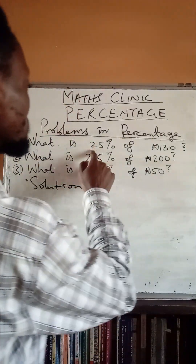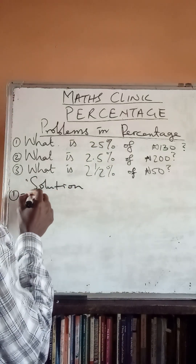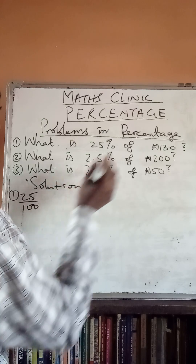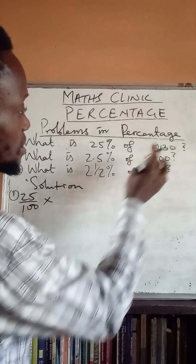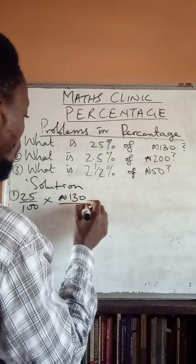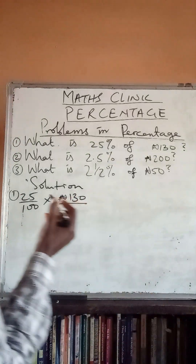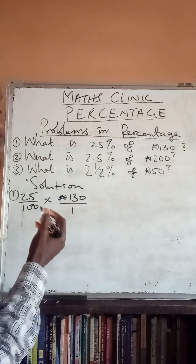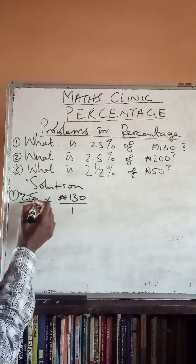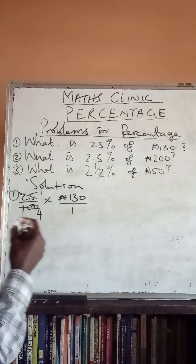...of 130 naira means 25 over 100, times 130 naira over 1. We divide straight away. 25 can divide 100 because 25 is a factor of 100 without any remainder, so 25 into 100 gives us 4.